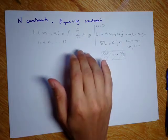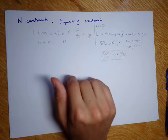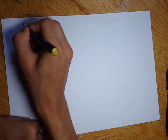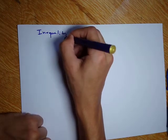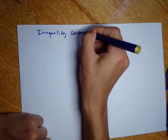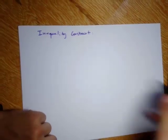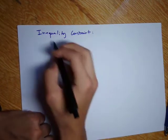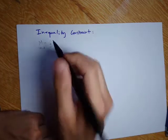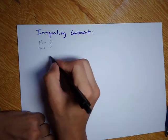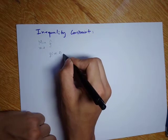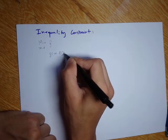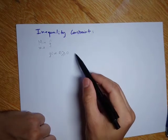Now I will talk about how to solve the constrained optimization problem for inequality constraints. Say I have a function that I want to minimize for W and D, and I have a constraint in this form: G of W and D should be higher or equal to zero. This is an example of an inequality constraint.